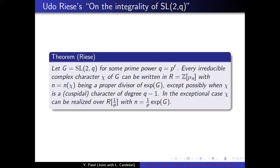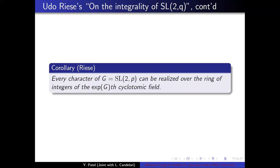So this is Udo Ries' central result in his paper. Let g equals SL2q for some prime power q. Every irreducible complex character of g can be written in the ring R equals Z adjoined with the principal nth root of unity, where n is a proper divisor for the exponent of g, except in a cuspidal case. So I focused on the corollary, which said every character of g, when it's SL2p, can be realized over the ring of integers of the exponent g-th cyclotomic field.